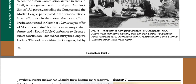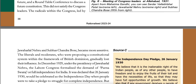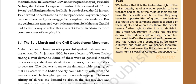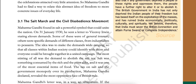In an effort to win them over, the Viceroy Lord Irwin announced in October 1929 a vague offer of Dominion status for India in an unspecified future and a roundtable conference to discuss a future constitution. This did not satisfy the Congress leaders. The radicals within the Congress led by Jawaharlal Nehru and Subhash Chandra Bose became more assertive. In December 1929, under the presidency of Jawaharlal Nehru, the Lahore Congress formalized the demand of Poorna Swaraj or full independence for India. It was declared that 26 January 1930 would be celebrated as Independence Day when people were to take a pledge to struggle for complete independence. But the celebrations attracted very little attention, so Mahatma Gandhi had to find a way to relate this abstract idea of freedom to more concrete issues of everyday life.